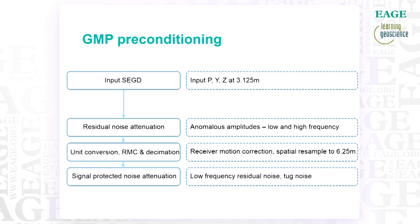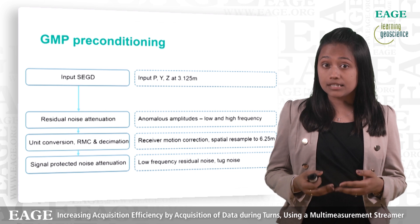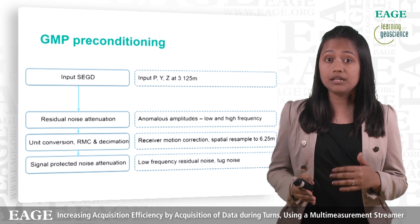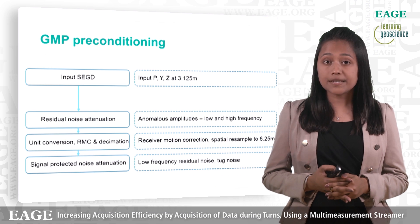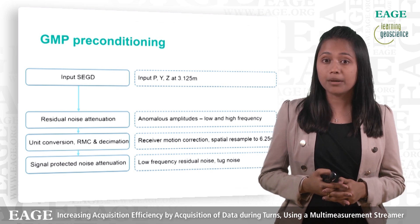We applied the standard GMP preconditioning workflow, a flow which we have developed based on our experience of acquiring and processing multi-measurement streamer data. This workflow consisted of the data post-acquisition conditioning at 3.125 meters spacing for all three measurements: P, Y, and Z. Residual noise attenuation targeting anomalously low and high-frequency noise was then applied. Unit conversion was then performed along with receiver motion correction and the data was spatially resampled to 6.25 meters. Signal protected noise attenuation was applied, aimed at attenuation of residual low-frequency noise, specifically tug noise from the cables. Details of this flow are available in a separate publication.